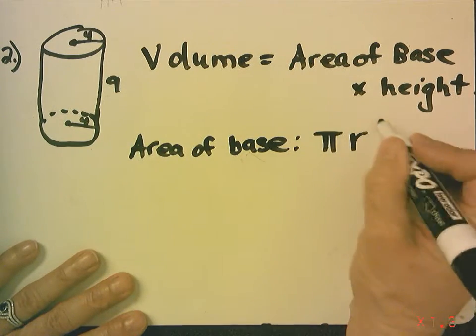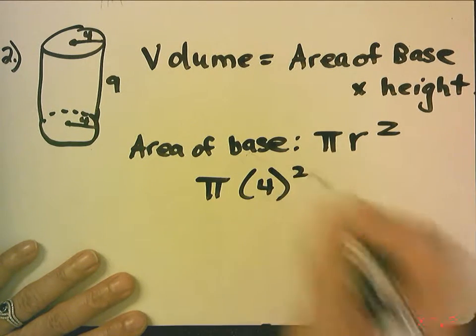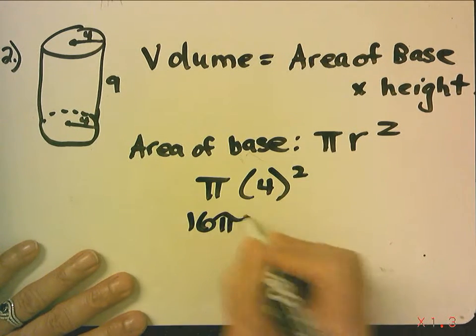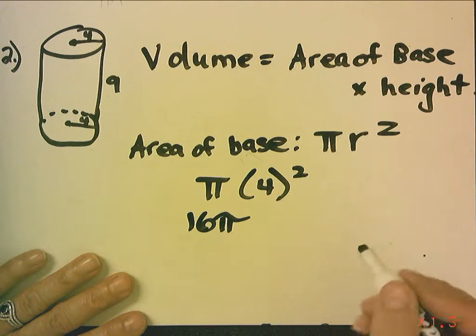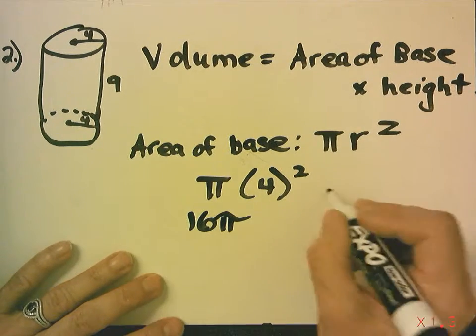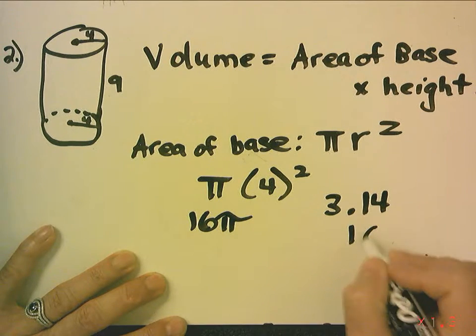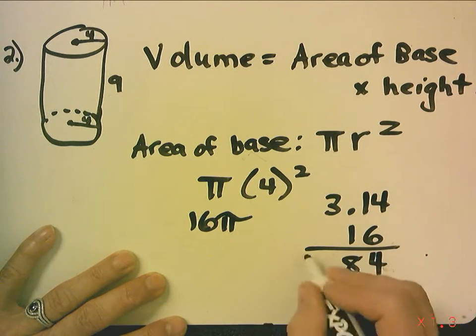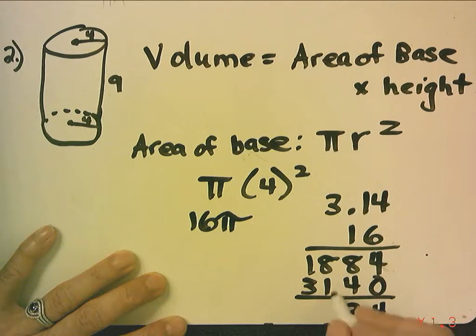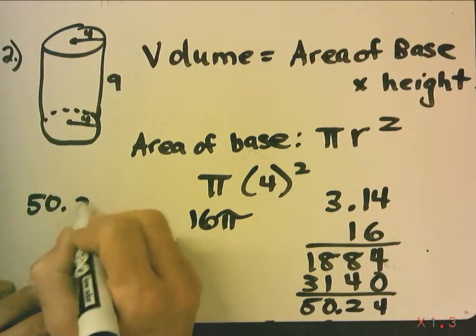Which is pi r squared. In this particular case, r is 4. So, 4 squared is 16, so this answer is 16 pi. And if we use a calculator, we can get the exact answer. If we want, we can just use 3.14 times 16, and we get 50.24.